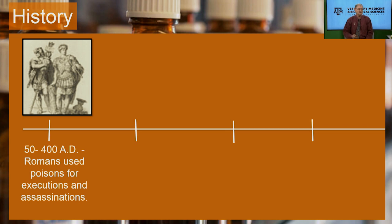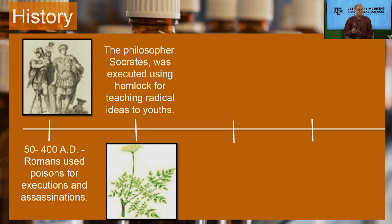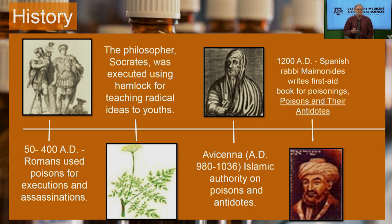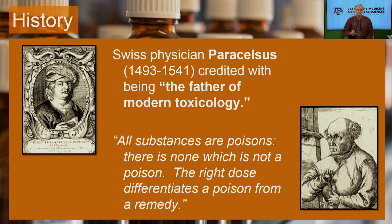The Romans used poisons for execution and assassination. In fact, the philosopher Socrates himself was killed by hemlock for teaching radical ideals to youth. Islamic authorities talked about poisons and antidotes, and a Spanish rabbi produced a book on poisons and their antidotes — a first aid book people could use. Those were milestones along the history.